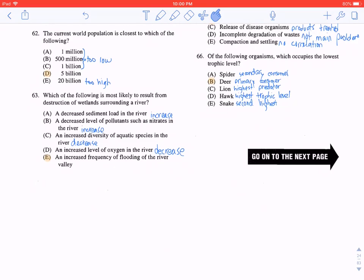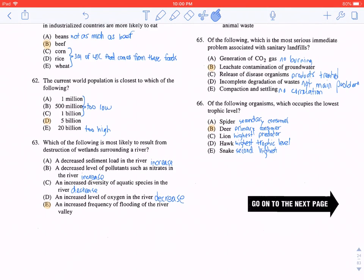Question 63: Which of the following is most likely to result from destruction of wetlands surrounding a river? It wouldn't be A, because it's actually an increase in sediment load in the river. It wouldn't be B, because it's an increased level of pollutants such as nitrates in the river. It wouldn't be C, because it's a decreased diversity of aquatic species in the river. And it wouldn't be D, because it's a decreased level of oxygen in the river. So the correct answer here is E, an increased frequency of flooding of the river valley.